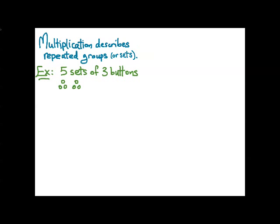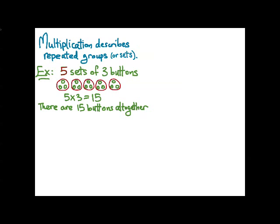For example, five sets of three buttons can be drawn like this. By using multiplication, we can find that 5 times 3 is equal to 15. Fifteen tells us the total number of buttons in the five sets. So there are 15 buttons all together.